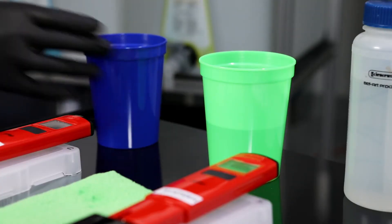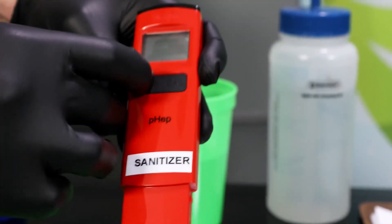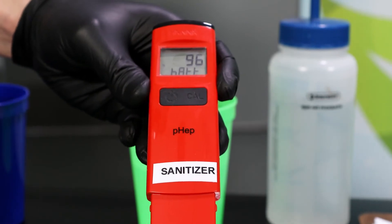Turn on each Hanna pH meter by pressing the power button. Once the screen displays numbers, it's ready to take a measurement.